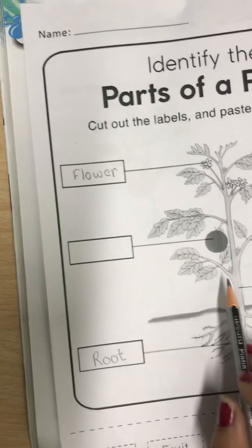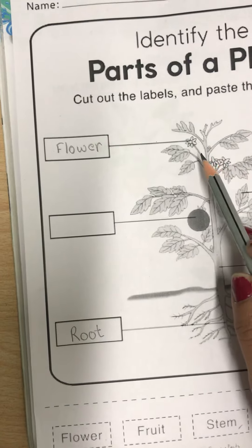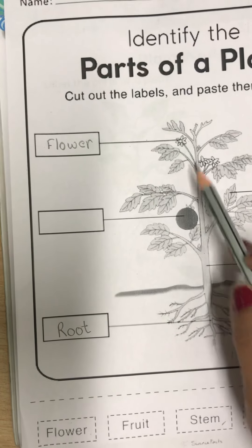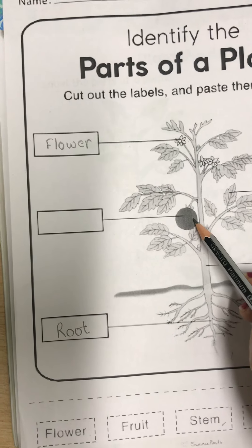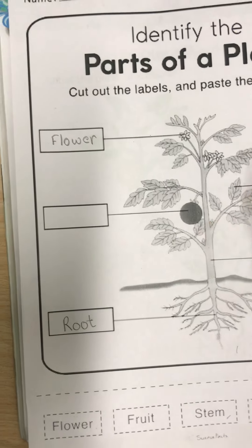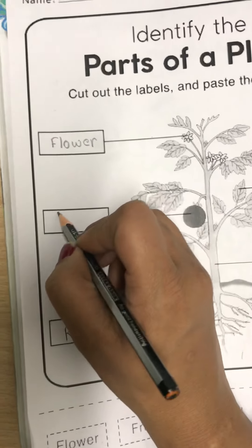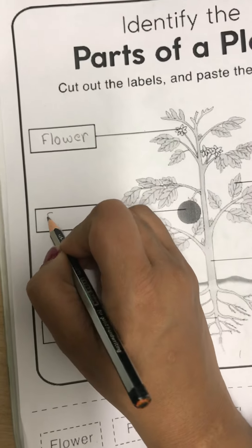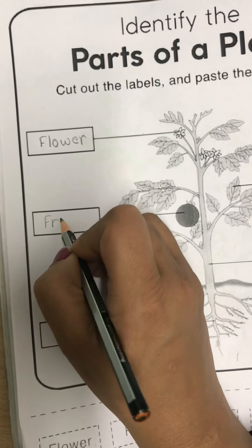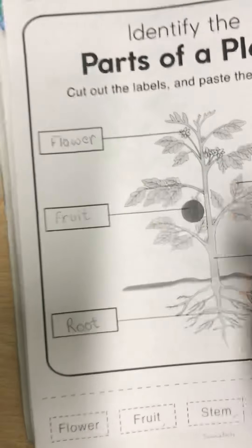Now move on to next. This is the fruit. Many flowers grow into yummy fruits that we eat. Write down: fruit.